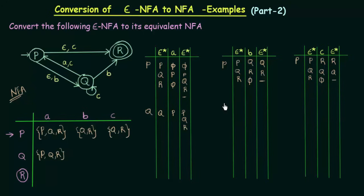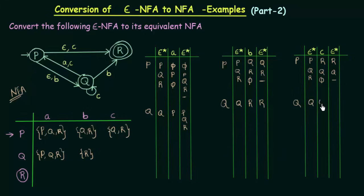Q on input B: Q's Epsilon closure is only Q, and Q on input B goes to R. R's Epsilon closure is only R. So that means here we will have only R. And for input C: Q's Epsilon closure is Q, Q on input C goes to Q itself, and Epsilon closure of Q is Q. So here we have only Q.